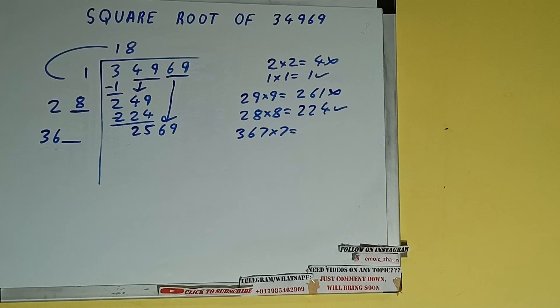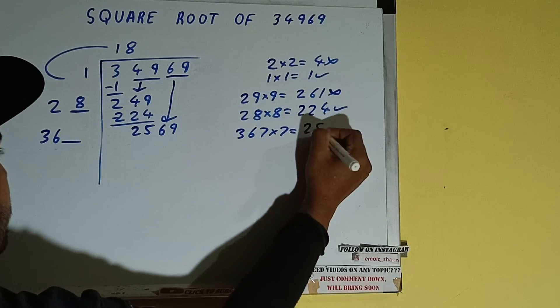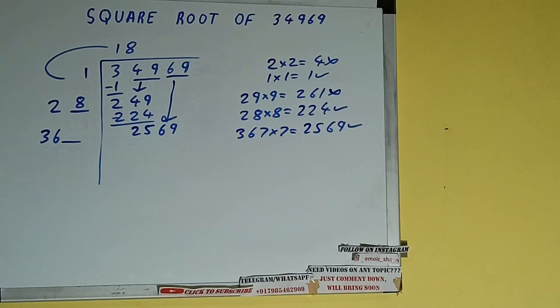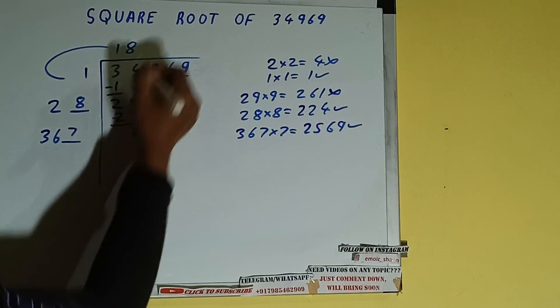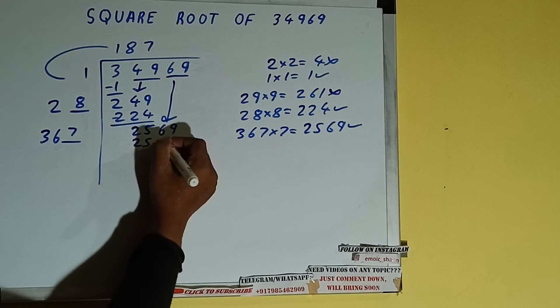2569, which is good to take. So 7 here and 7 here. 2569 subtract, 0 will be left.